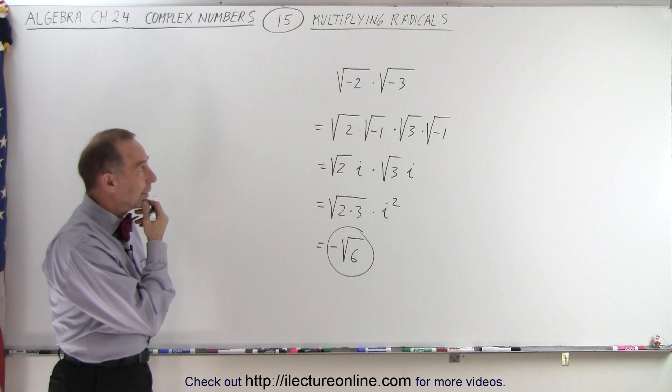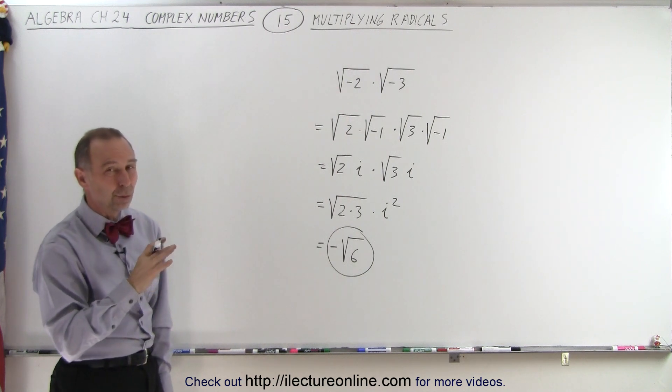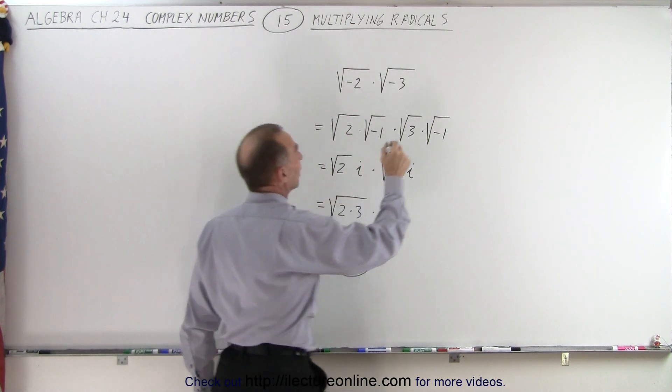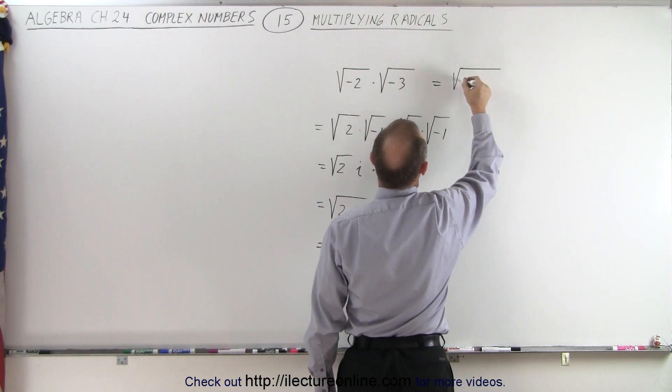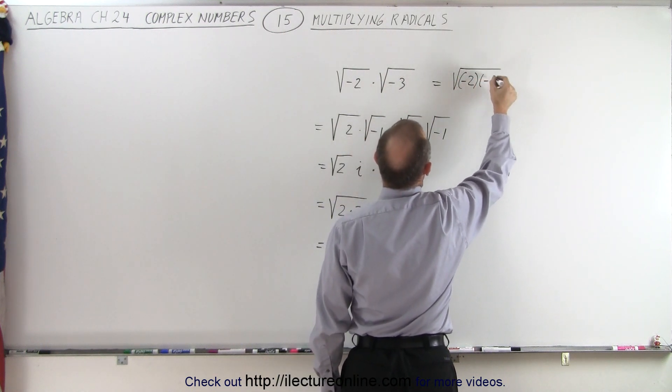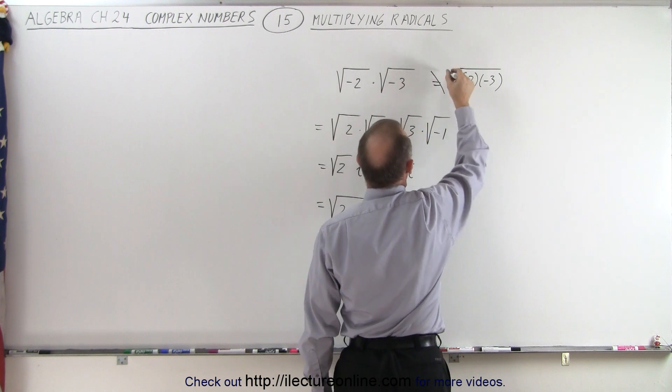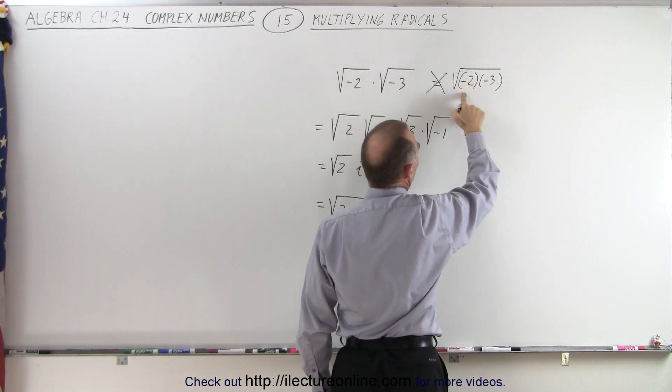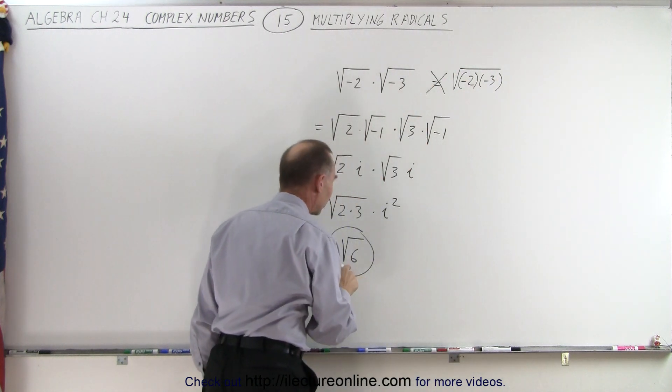Normally, if you do it the wrong way, if you say this equals the square root of negative 2 times negative 3, well, that is not the case, because then you end up with the square root of positive 6, which is not the correct answer.